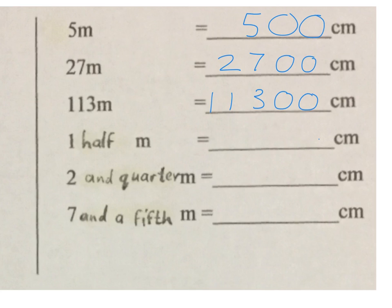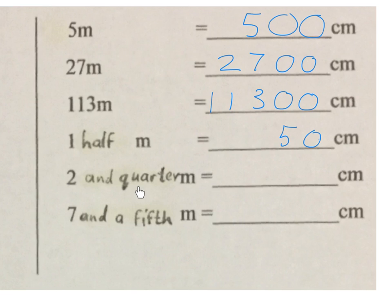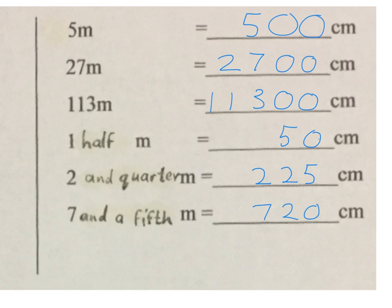Now we go into practical combinations with fractions. A half meter — one meter is 100, so half of a meter is 50 centimeters. Two and a quarter meters: two meters is 200, and a quarter of 100 is 25, so the answer is 225 centimeters. Seven and a fifth meters: seven meters is 700, and a fifth of 100 is 20, giving 720 centimeters. Don't feel upset if you don't understand the quarter and fifth fractions totally — these are the trickier ones.